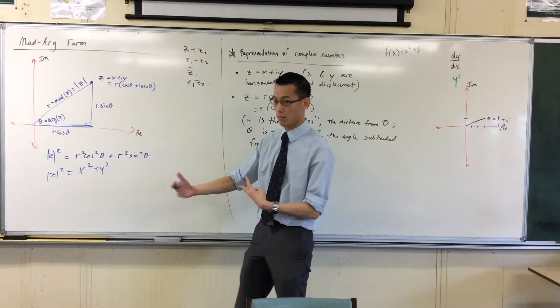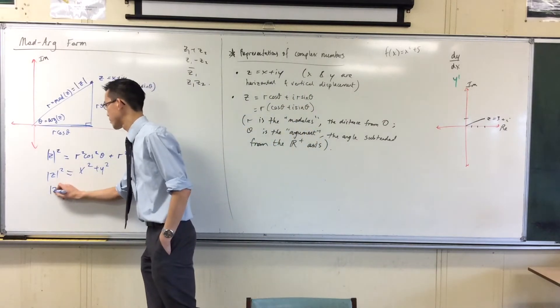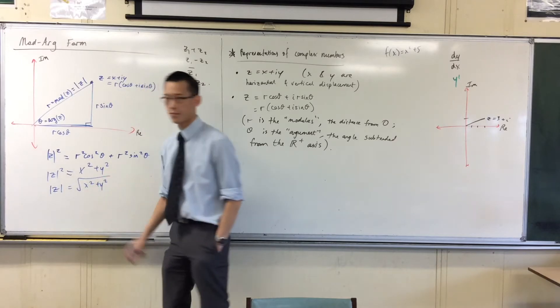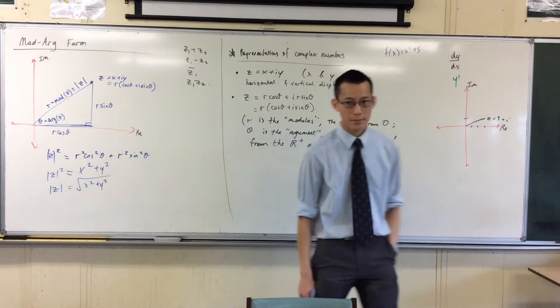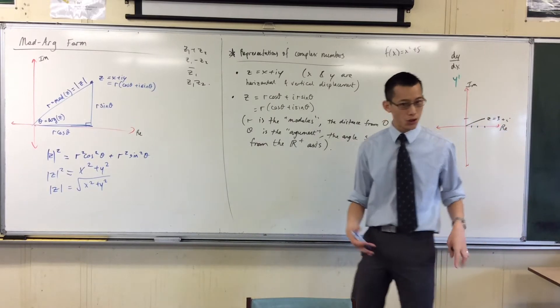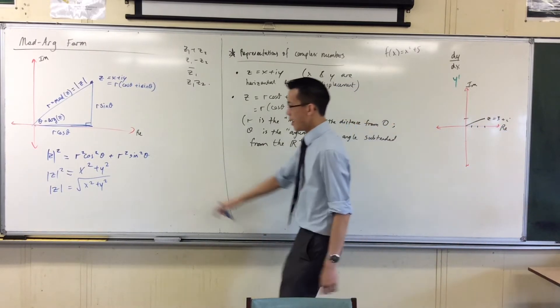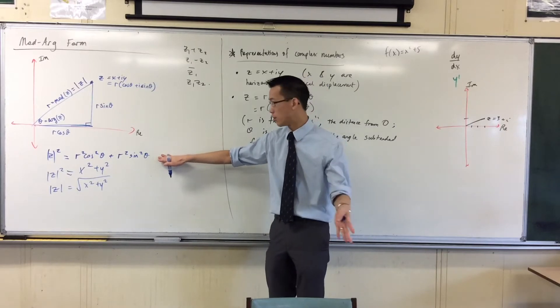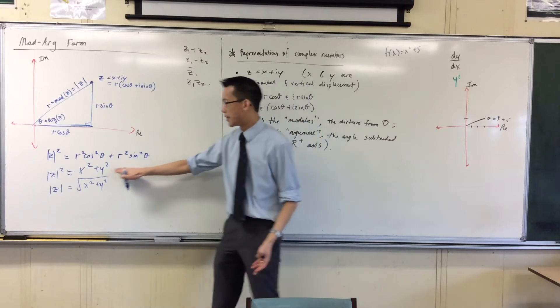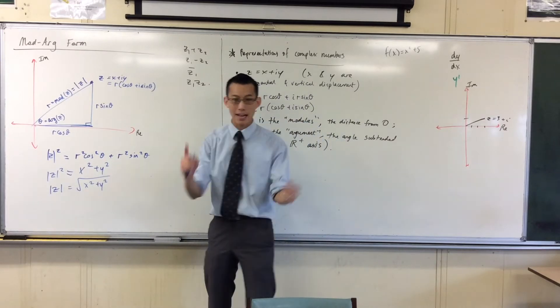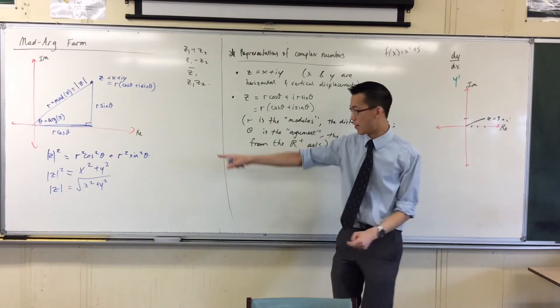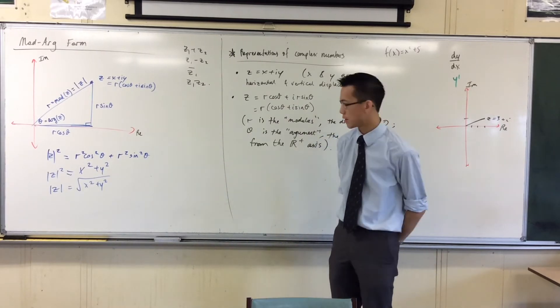That is mod z squared. So if I just want mod z, then it's the square root of the squares of those two numbers. So what was the point of doing that? This is true if I'm completely in mod arg form, but there's no meaning to it. It's a redundant statement. But this statement here allows me to convert. So conversion is useful. It will allow me to get from here over there, or vice versa if I need to.